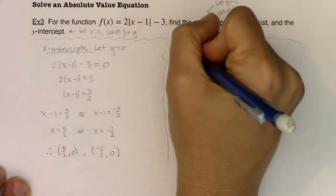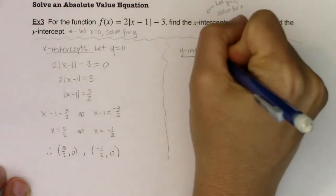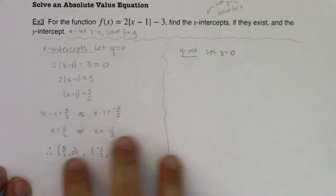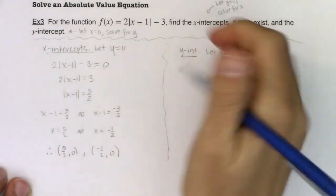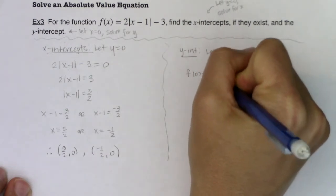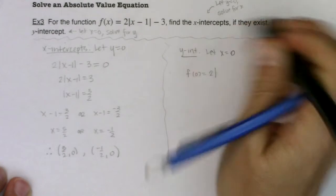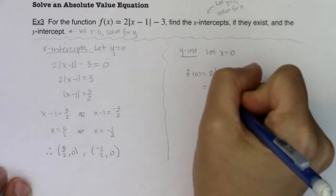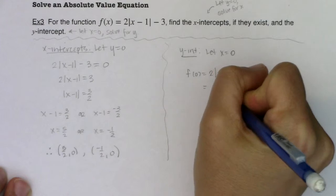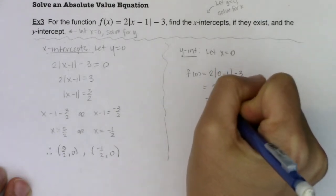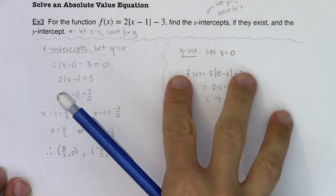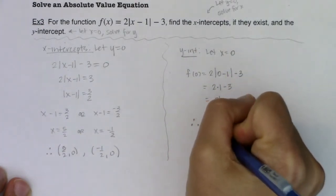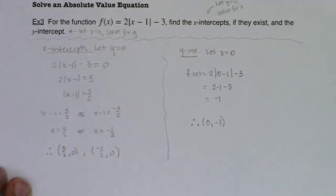Let's go find the y-intercept. For the y-intercept, you let x equal 0 — and like I said, finding y-intercepts is typically much easier than finding x-intercepts. So I'm going to plug 0 in for x: f(0) = 2|0 − 1| − 3. And 0 − 1 is −1; the absolute value of −1 is 1; so we have 2(1) − 3, which simplifies to −1. Keep in mind the y-intercept is a point on the graph, so I need an x and a y-coordinate: (0, −1).